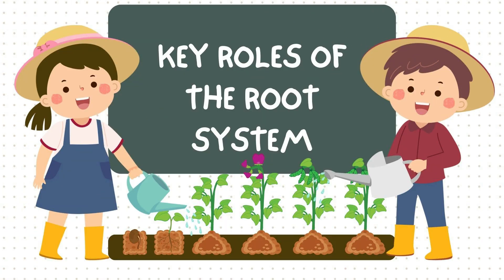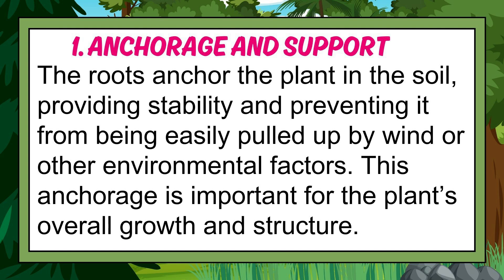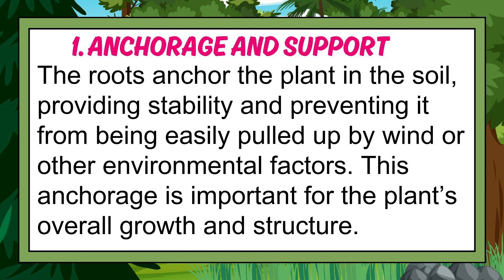The key roles of the root system. 1. Anchorage and support: The roots anchor the plant in the soil, providing stability and preventing it from being easily pulled up by wind or other environmental factors. This anchorage is important for the plant's overall growth and structure.